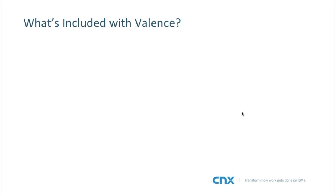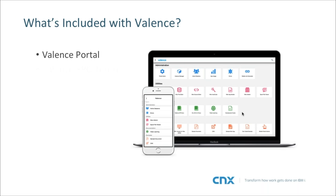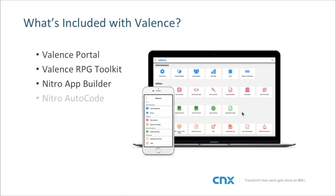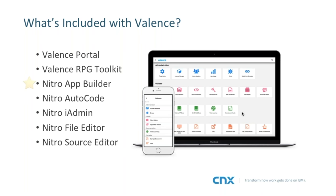What's included with Valence: there's the Valence Portal which manages login, session management, and how you deploy applications to users. The picture shows an example of the desktop portal, and there's also a mobile version available on the Apple App Store and Google Play. We have the Valence RPG Toolkit and Nitro App Builder, which will be the focus of this webinar. I put a star next to Nitro App Builder because it really is one of the key items of Valence — it drives a lot of Valence sales.